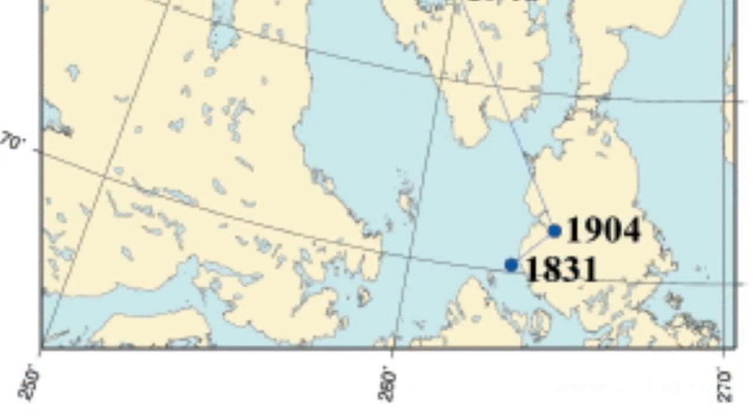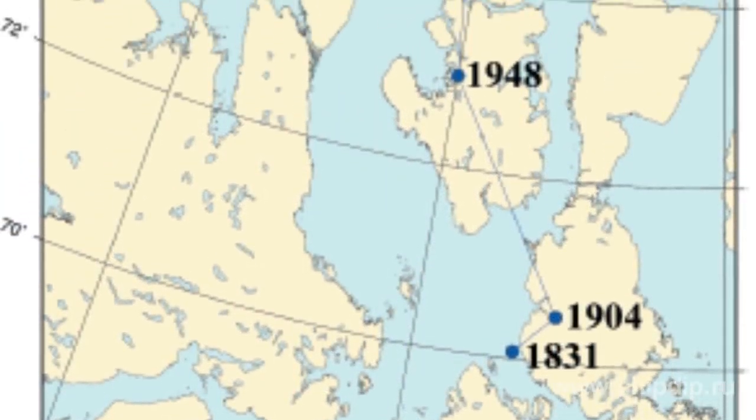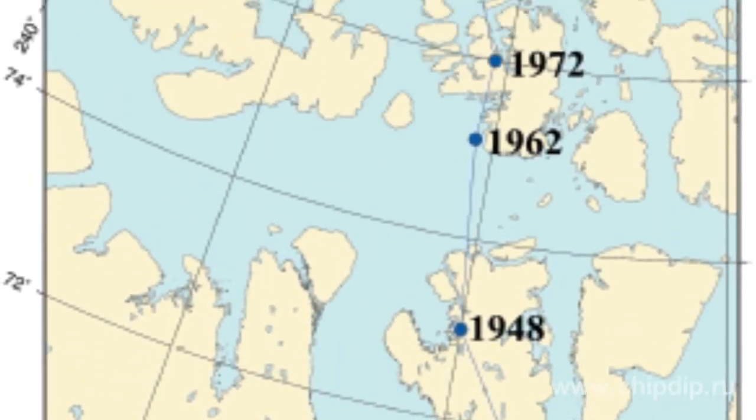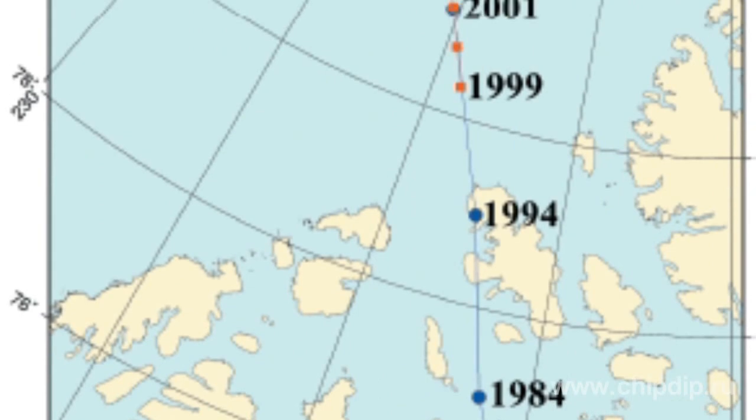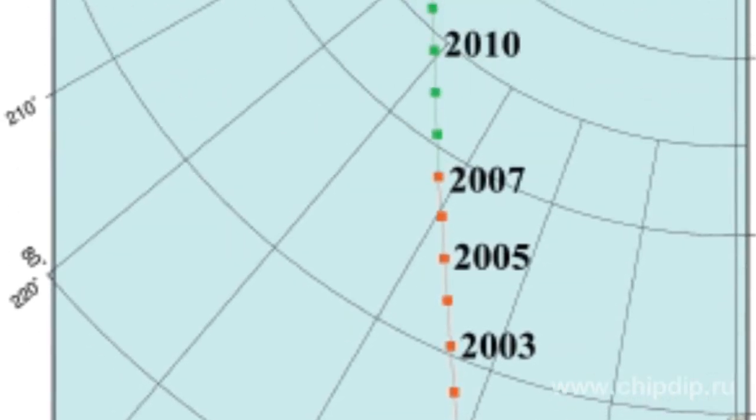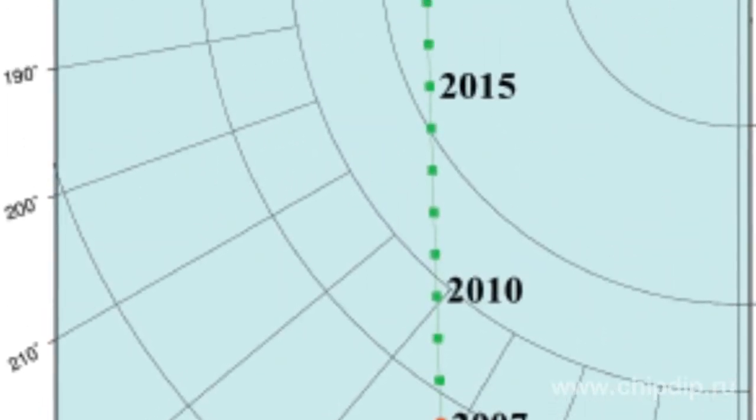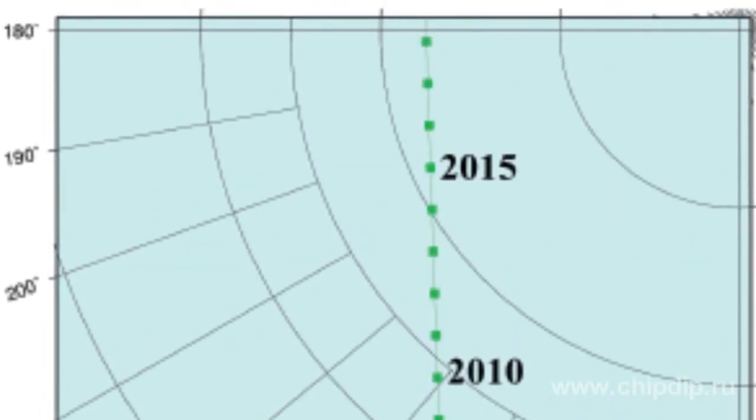The magnetic poles are constantly changing in their position by several tens of kilometers per year. It should be noted that the usual designation of poles as north and south is incorrect from a physical point of view.